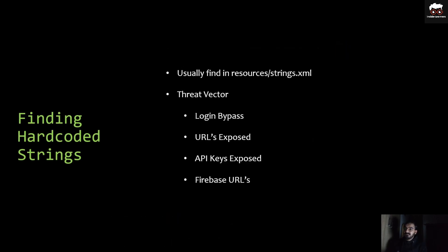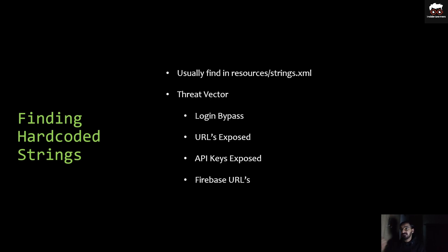For finding hard-coded strings, you will see all the required strings in resources/strings.xml, and you can go through other files available in the resources folder to find juicy information. Threat vectors are the methodology or points where you check if a vulnerability exists — for example: login bypass, exposed URLs, exposed API keys, or firebase URLs.